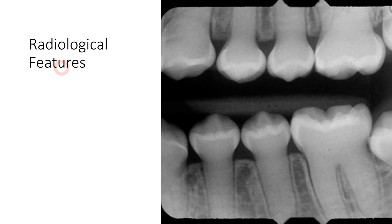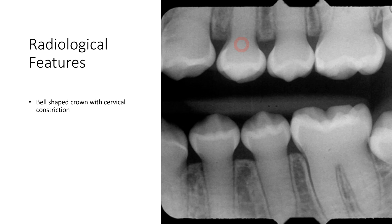Another important feature to keep in mind is the radiological features. The first radiological feature is that the teeth appear bell-shaped and are cervically constricted. As you can see, the crown is bell-shaped with cervical constriction, which you can also appreciate in these teeth.